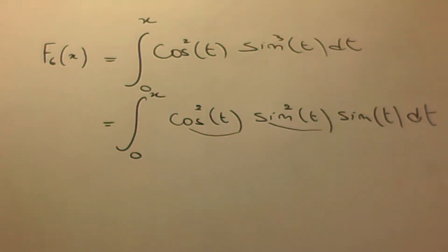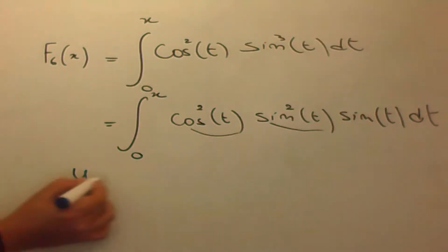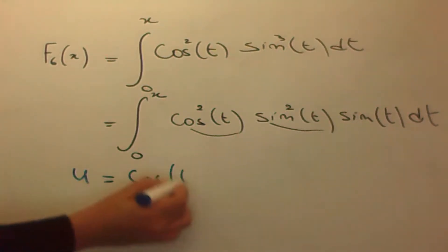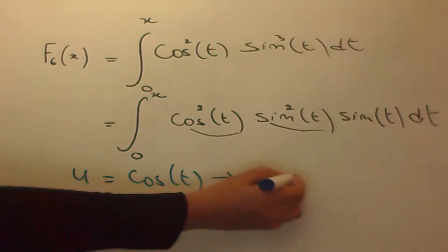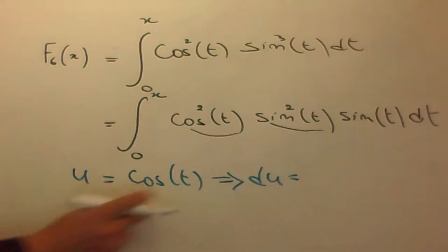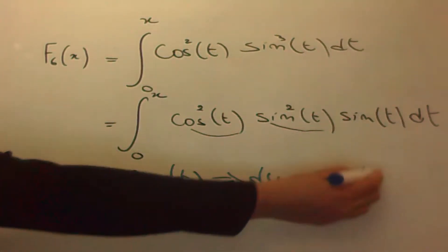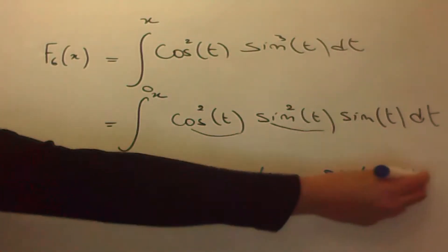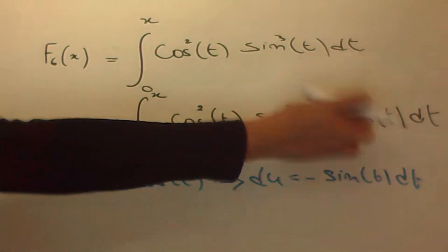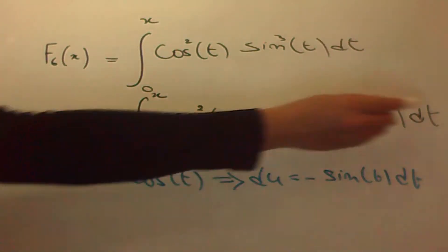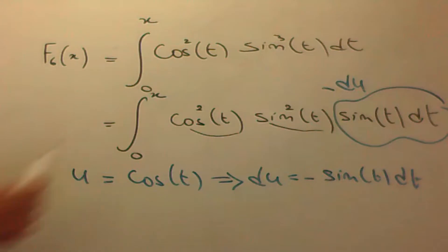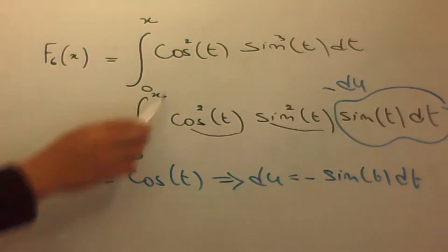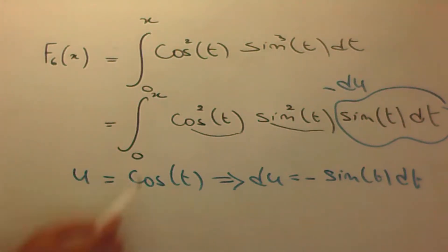Si je pose u égal à cosinus de t, alors on a du égal à — la dérivée de cosinus c'est moins sinus de t dt. C'est-à-dire on tombe sur le du, donc sinus de t dt c'est moins du.